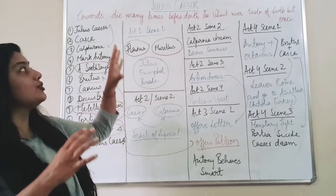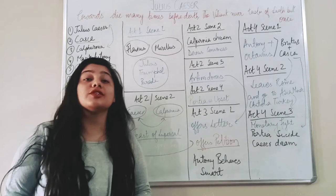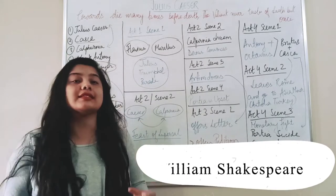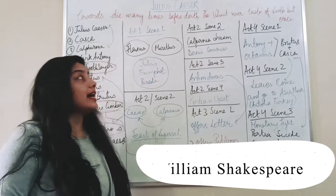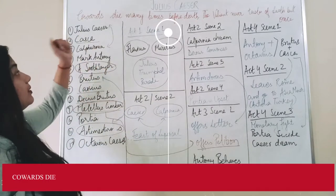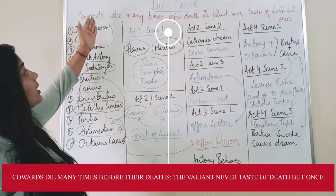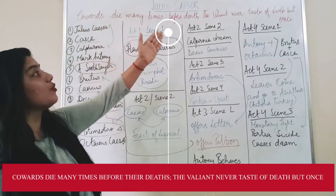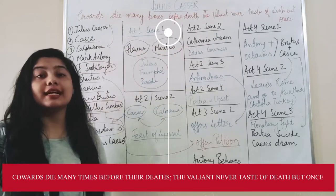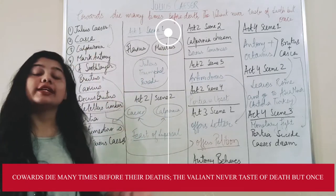Before starting the chapter you should know that Julius Caesar was written by Shakespeare. It is one of the finest writing, finest piece that he has written so far. One of the most famous statements said by the characters were 'Cowards die many times before death, the valiant never taste of death but once.'